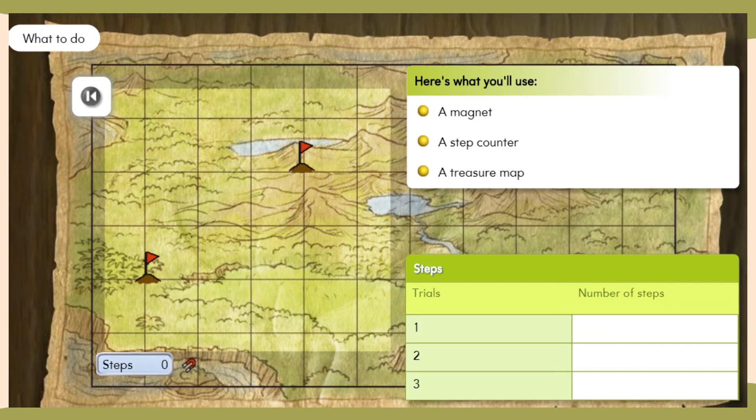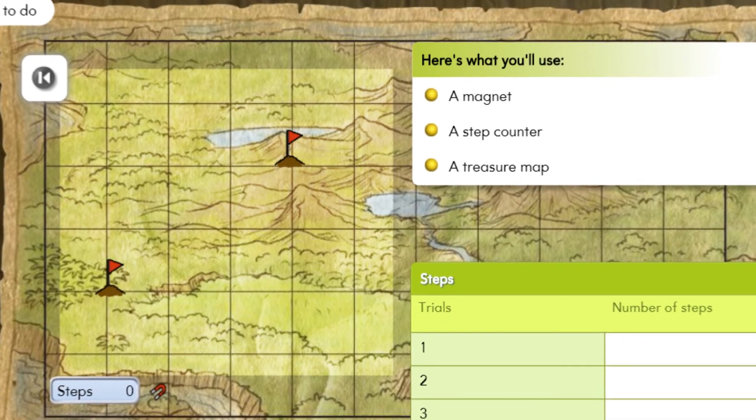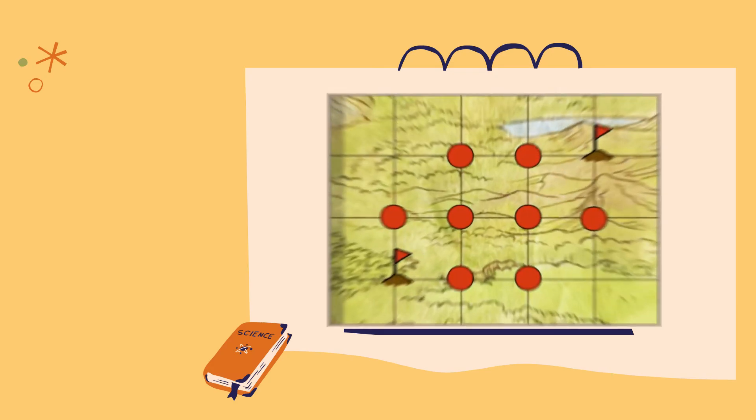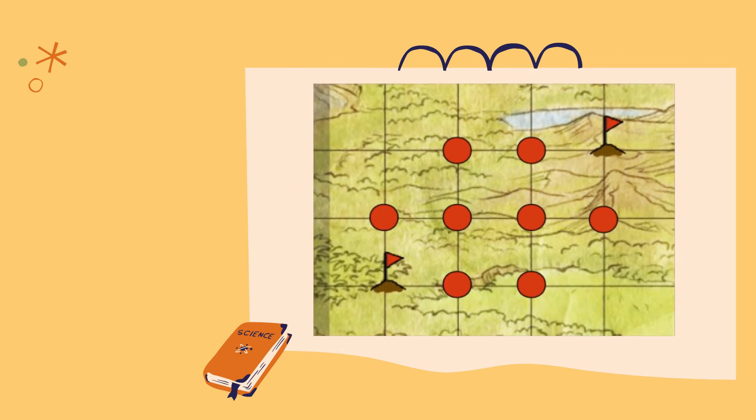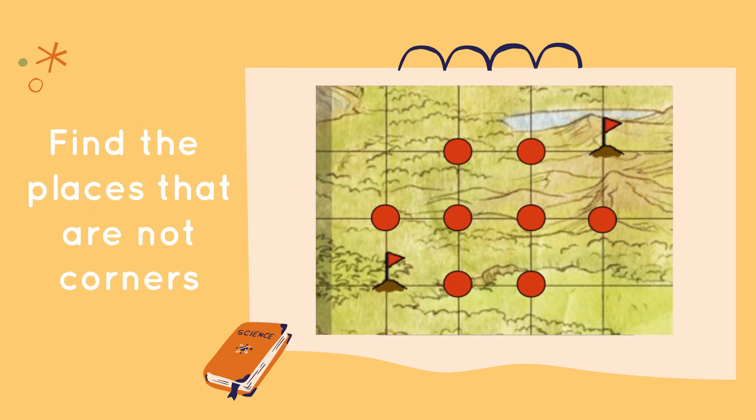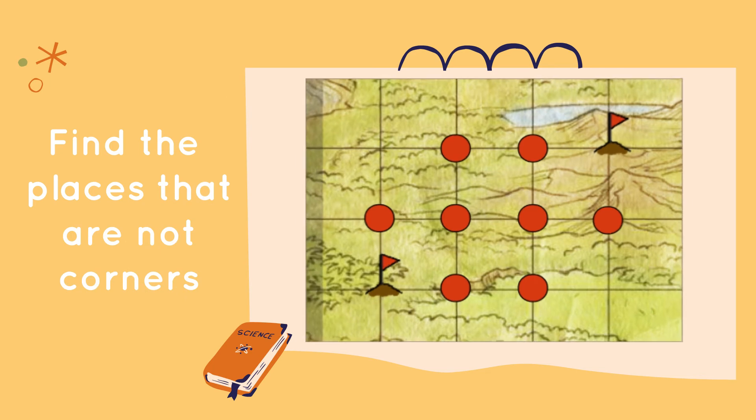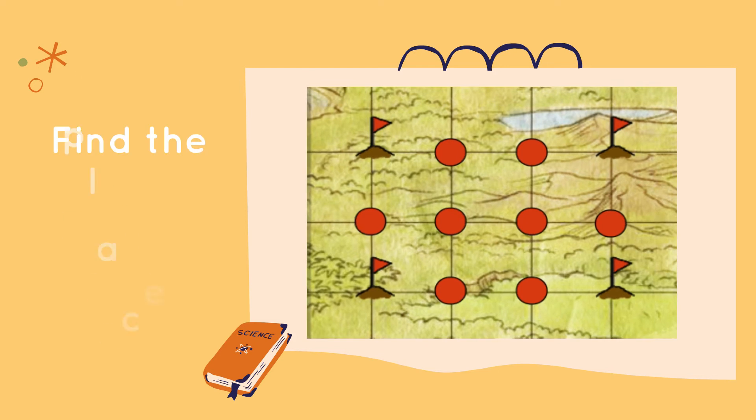We'll be using a magnet, a step counter, and a treasure map. First, we have to figure out the places that could not be corners of the rectangle we are trying to find. Then we find the places that are corners.